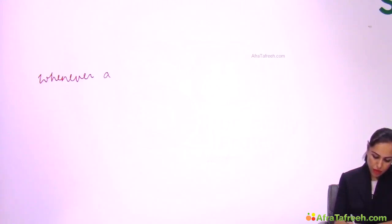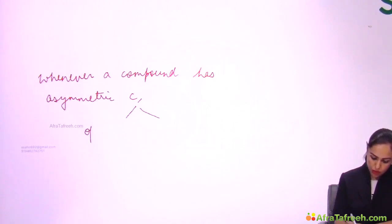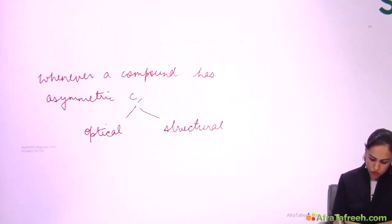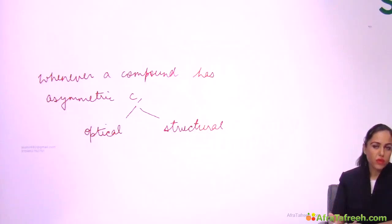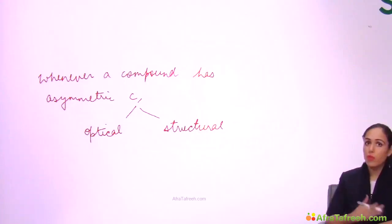Now, a general point about asymmetric carbon: whenever a compound has an asymmetric carbon, that compound will show both optical and structural isomerism. This is a general point — you can apply it in any topic and you will be right.